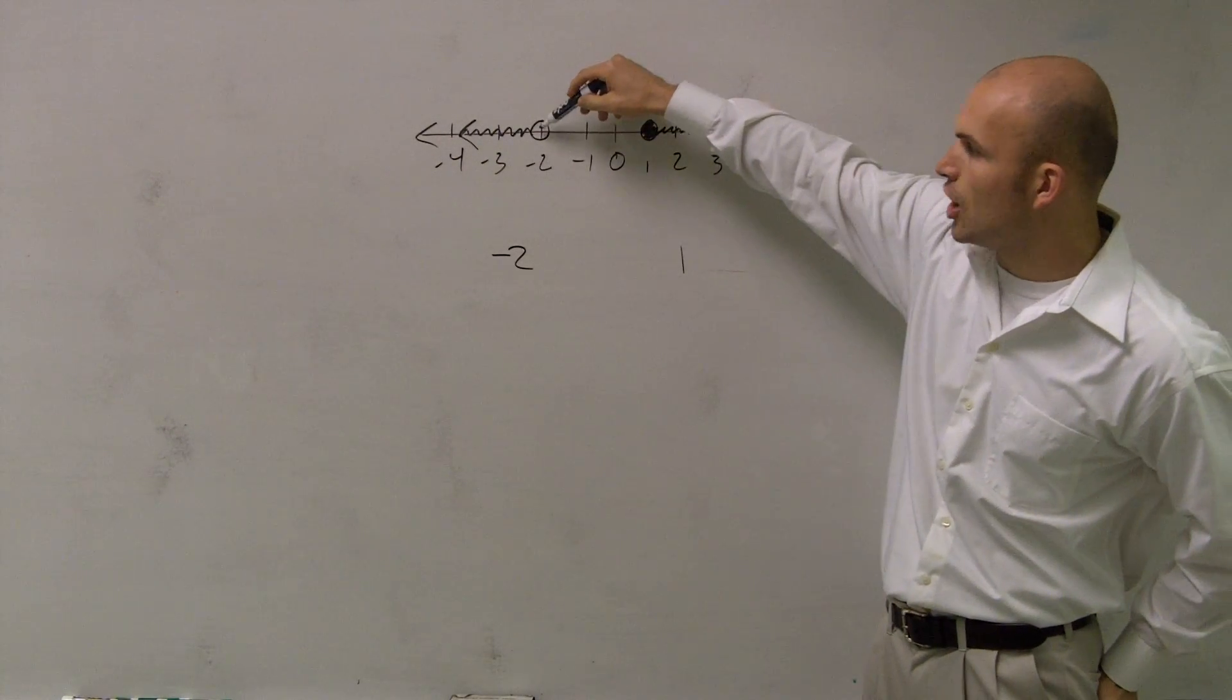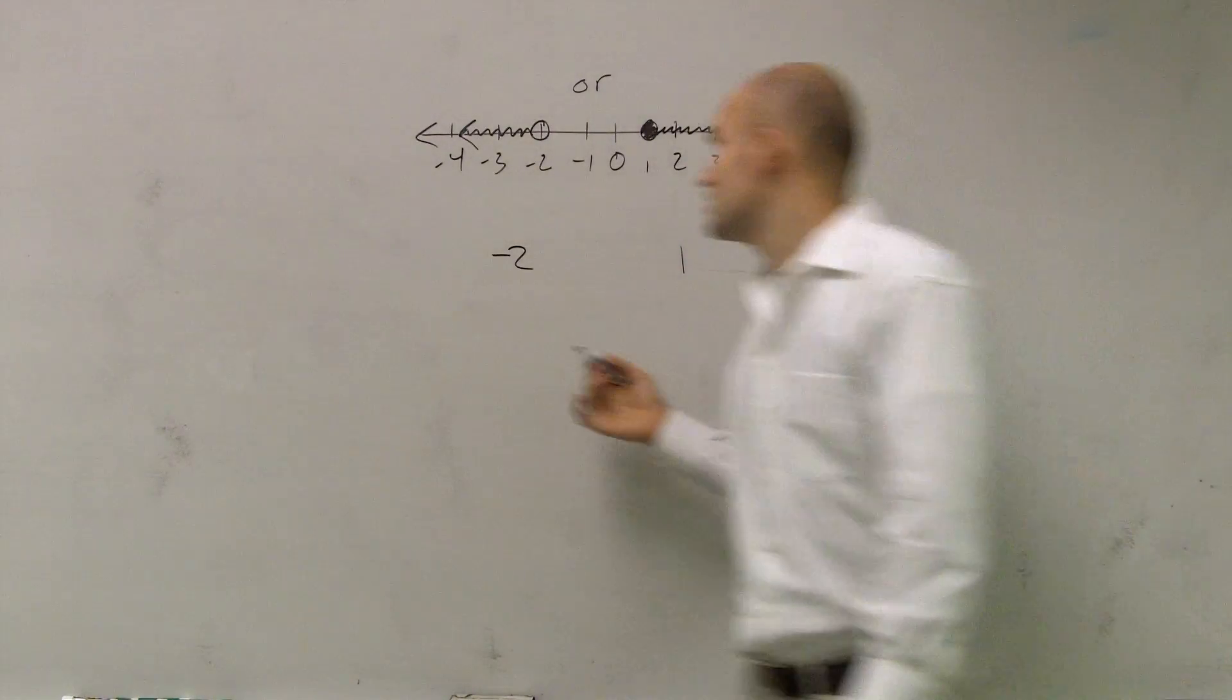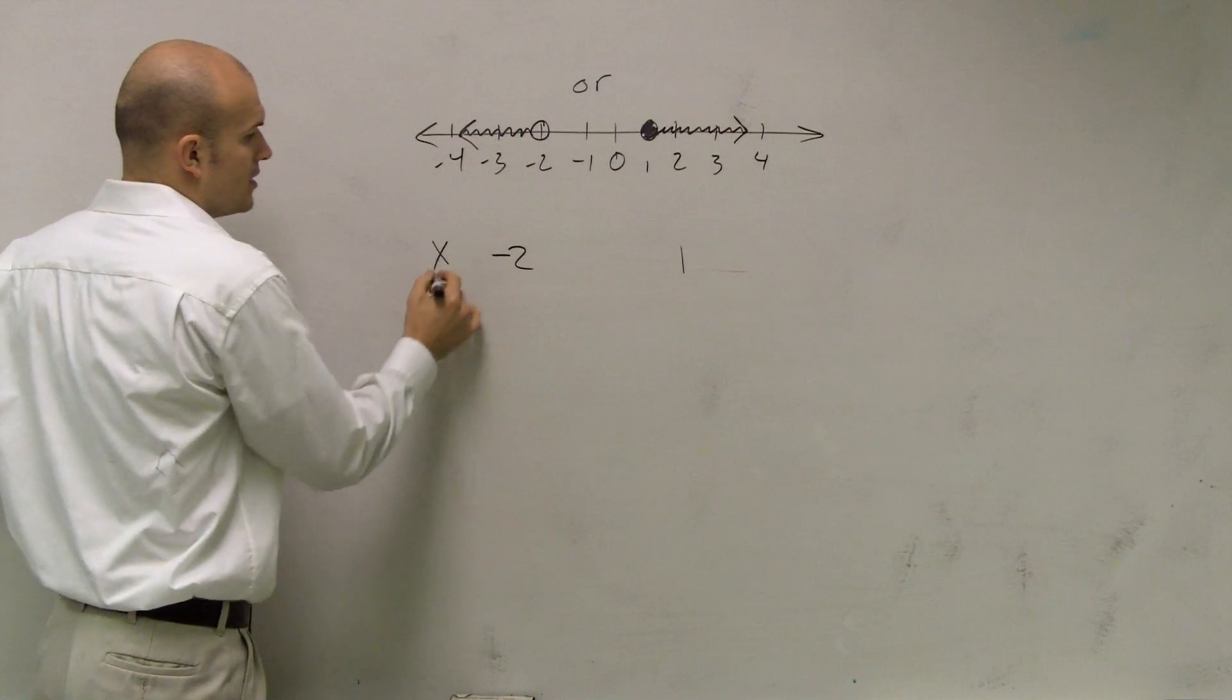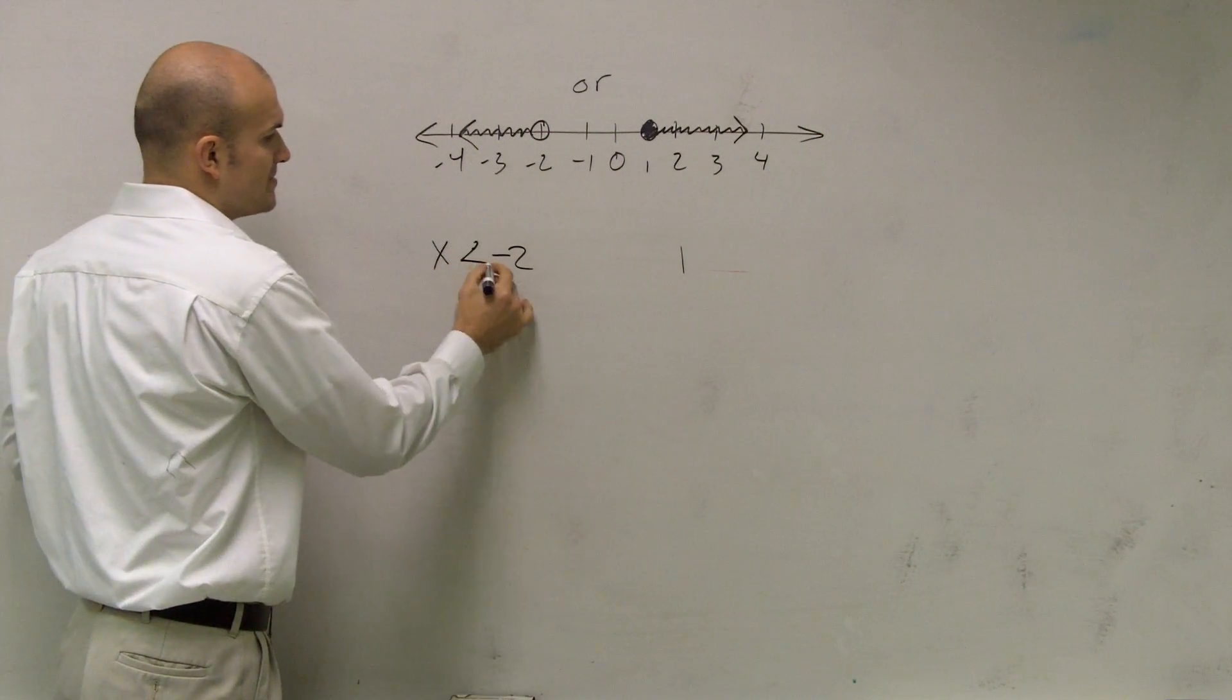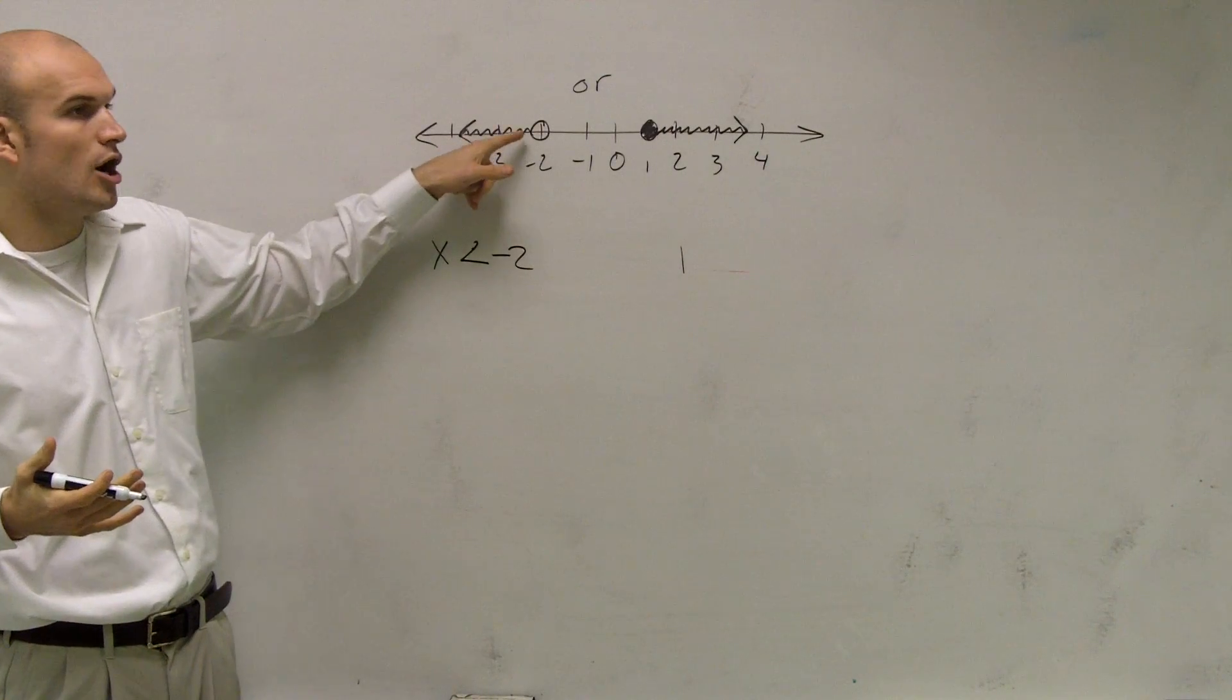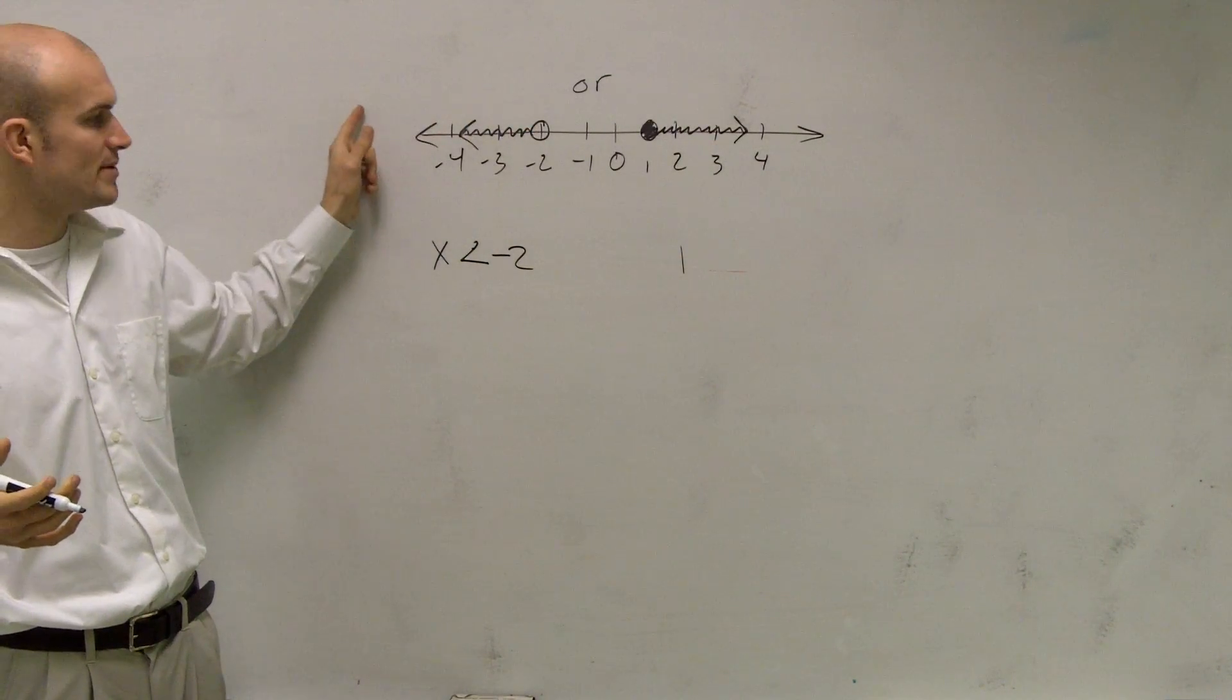Well, this says you can see all the values that are going to the left of negative two are making your inequality true. So I can say x has to be less than negative two. So I'll write x, and I'm going to say it has to be less than negative two. So what that means is all values that are less than negative two make it true. You can see that's where my arrow has been written.